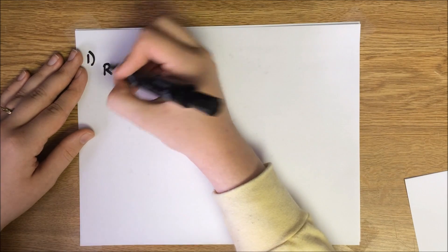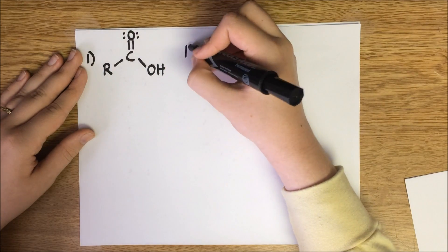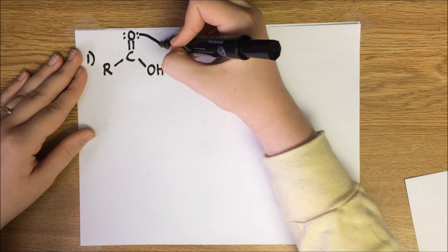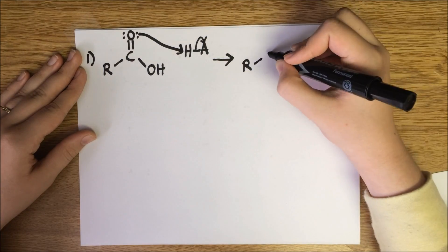For the first step, we are going to start with a carboxylic acid and protonate it with an acid. The electrons on the carbonyl oxygen are going to attack the hydrogen on the acid and pull it away. This forms a charged oxonium ion.